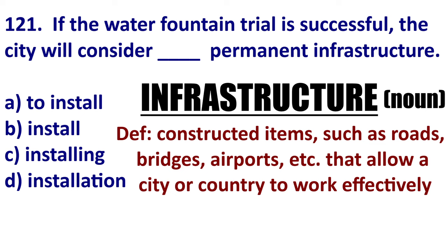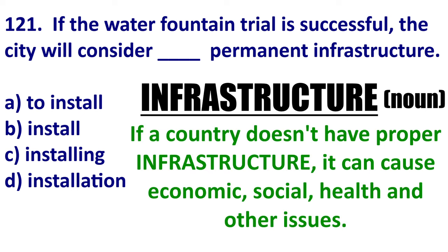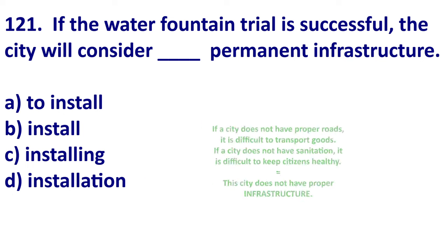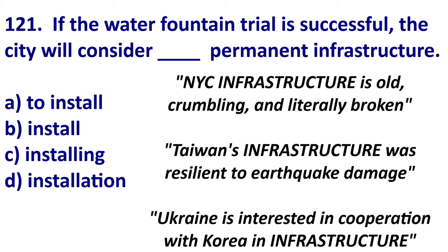Here's an example of infrastructure in a sentence: if a country does not have proper and high-quality infrastructure, it can cause economic, health, and social problems. That means if a city does not have proper roads, it is difficult to transport goods. If a city does not have proper sanitation such as sewage, toilets, and running water, it can cause health problems. Let's look at three headlines from around the world that use infrastructure. As you can see, because of Taiwan's proper and high-quality infrastructure, it was able to not suffer so much from the earthquake.